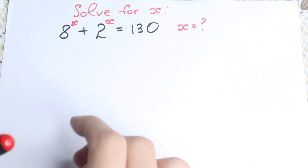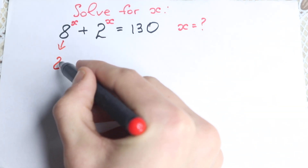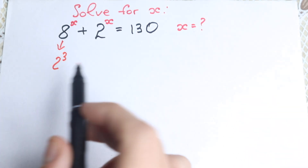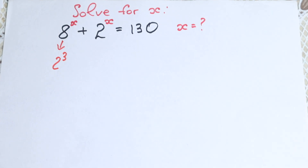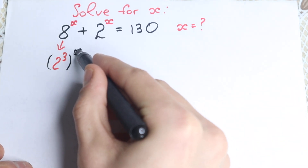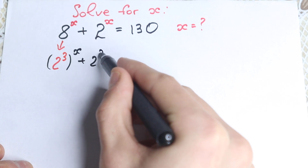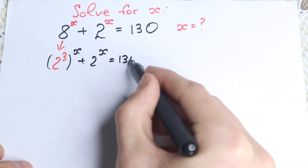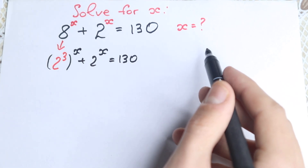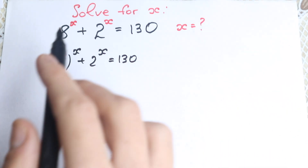So I write it right here: 8 can be written as 2 cubed, which is really great, and then we will have the same bases. So: 2 cubed to the power x, plus 2 to the power x, equals 130. This is our first step and I hope you understand this step.